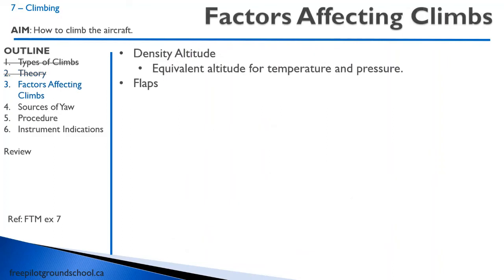There are some factors affecting climbs. The biggest one is going to be density altitude — the density altitude is the equivalent altitude for temperature and pressure. Let's say it is cold outside and it's 1,000 feet above sea level at 13 degrees; that's about your density altitude. But if it is now 30 degrees out, the air is going to be a lot less dense, and so the equivalent altitude might be 3,000 feet. The aircraft will perform the same at this altitude and pressure as it would if it were much cooler but at a higher altitude. This will show up in climbs and also in takeoffs because it has a huge impact on your takeoff distance — how dense the air is.